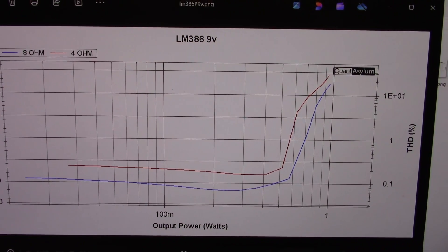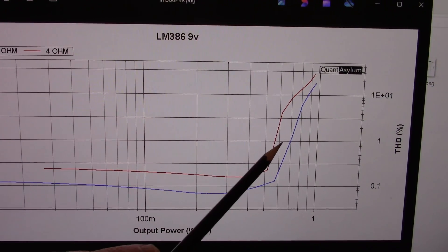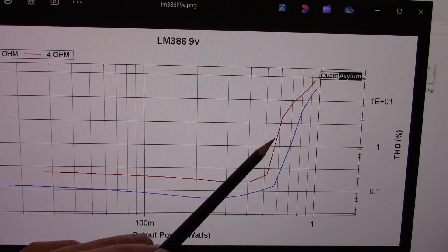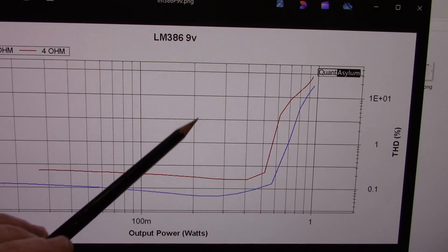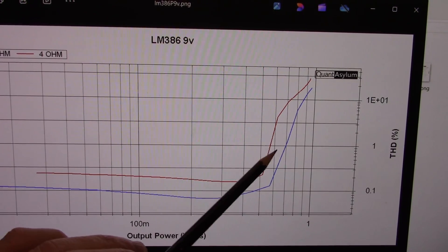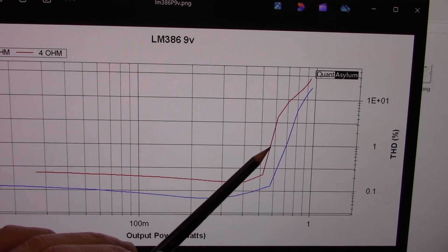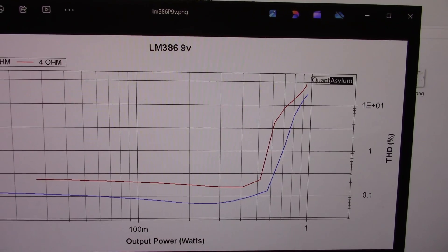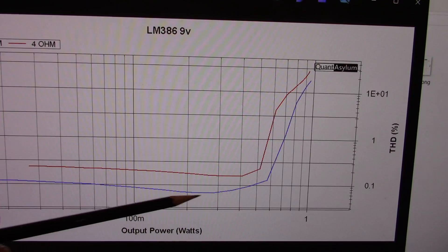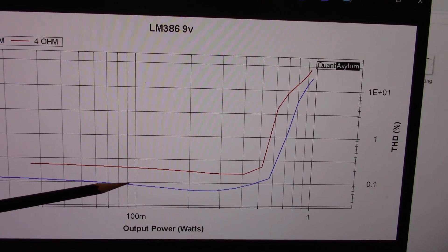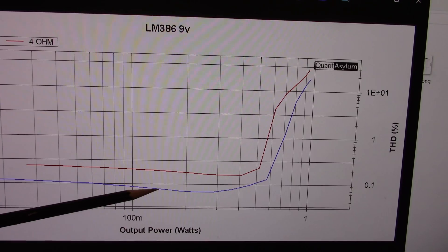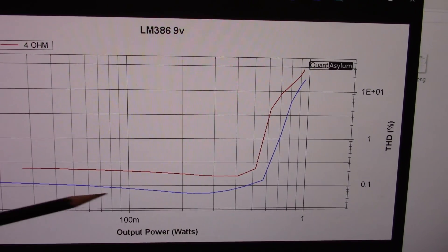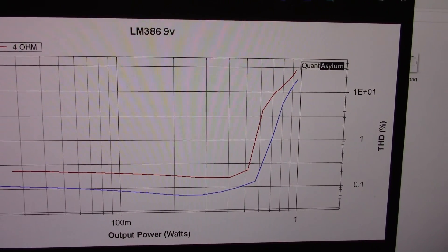Compared with the LM386, you can see at 8 ohms, we were at 1% at 700 milliwatts. In 4 ohms, it actually dropped, and it was just shy of 600 milliwatts. So the 7267 is doing much better. The 4 ohm distortion is better on the TDA7267, though the LM386 8 ohm distortion is close to the 0.1 line, as is the 7267.